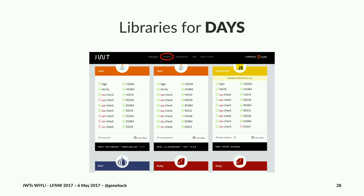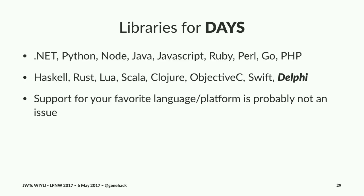The other nice thing on JWT.io is a list of all the libraries the JWT people know about — and there are a lot. JWT has libraries for days. Currently there are libraries for .NET, Python, Node, Java, JavaScript, Ruby, Perl, Go, PHP, Haskell, Rust, Lua, Scala, Clojure, Objective-C, Swift, and Delphi. Any time you see something written in the last decade that has Delphi support, it probably has support for whatever you are using.